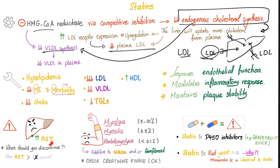Side effects of statins include increased AST — they are hepatotoxic because they work in the liver. When should you discontinue statins? When AST increases to three times the upper limit of normal. For example, if normal AST is 10–40, the upper limit is 40, so 3× is 120. You stop the statin when the patient's AST exceeds 120. A mild increase from 40 to 45 is not clinically significant.